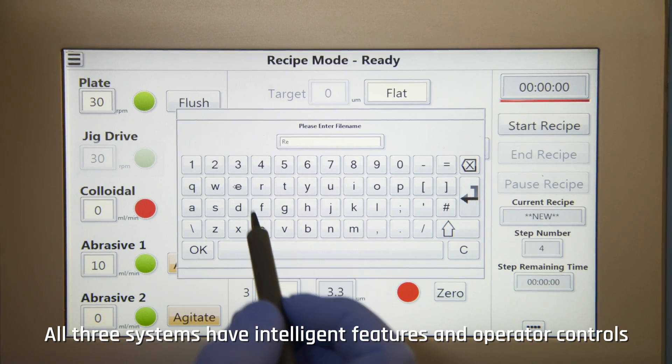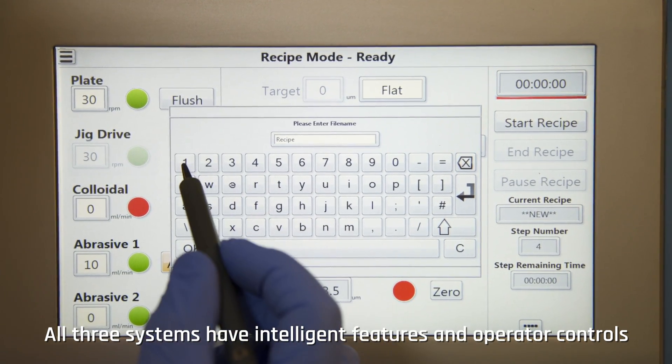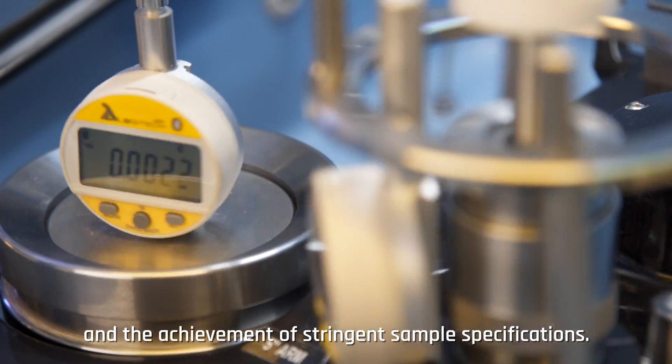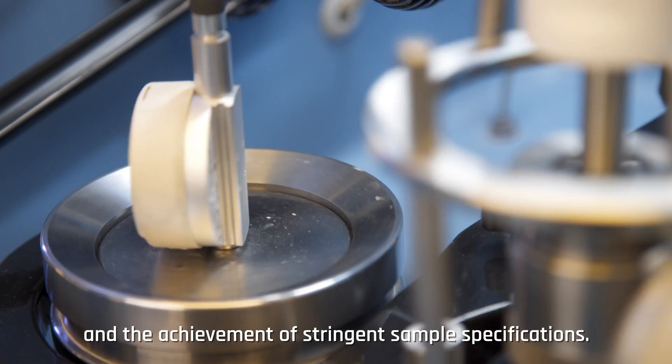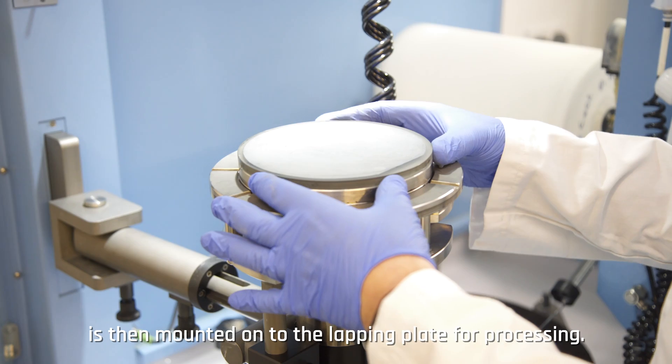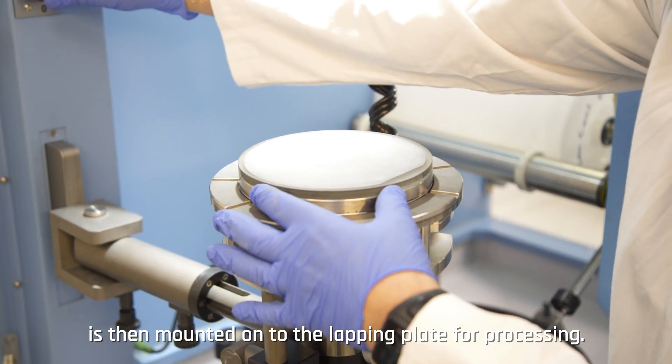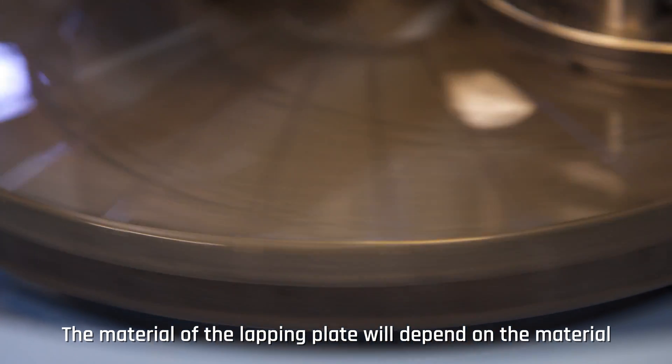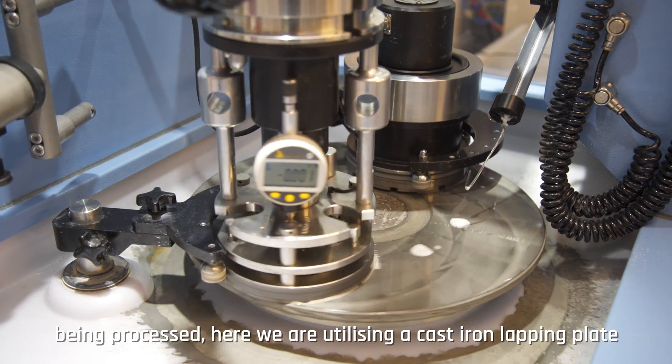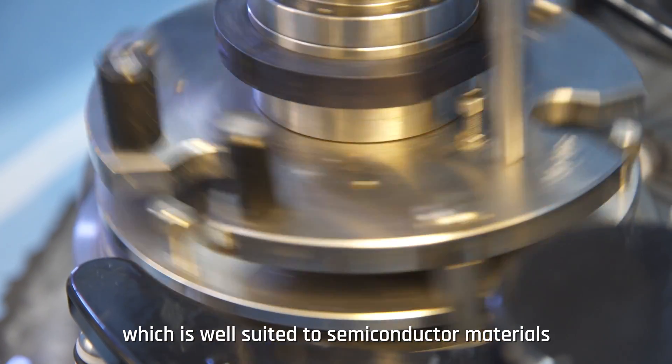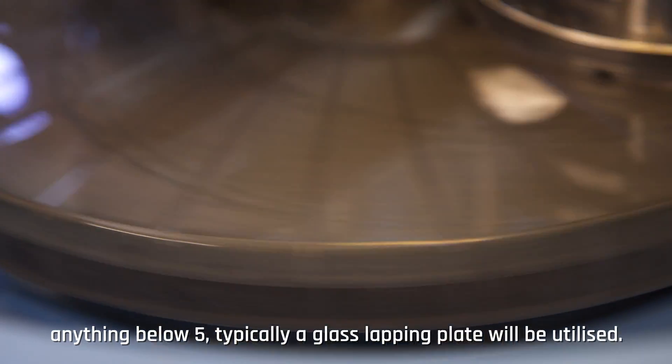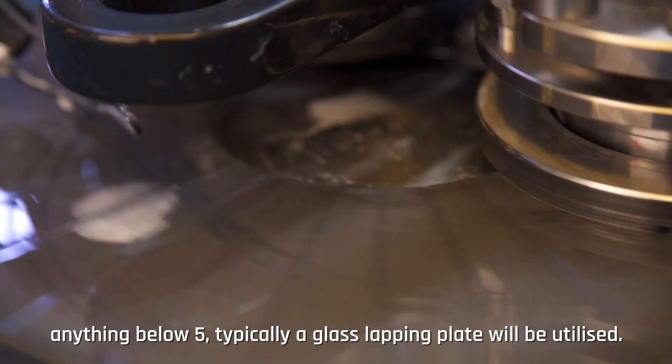All three systems have intelligent features and operator controls that allow for semi-automated processes and the achievement of stringent sample specifications. The sample held onto a Logitech precision jig via vacuum is then mounted on the lapping plate for processing. The material of the lapping plate will depend on the material being processed. Here we are utilizing a cast iron lapping plate which is well suited to semiconductor materials with a Mohs hardness of 5 or above. Anything below 5 typically a glass lapping plate will be utilized.